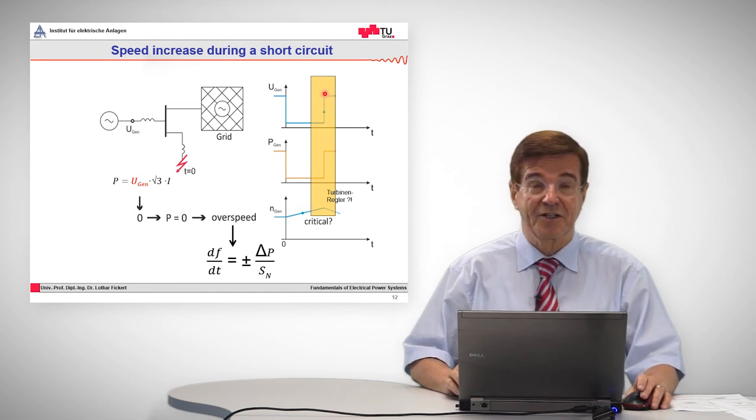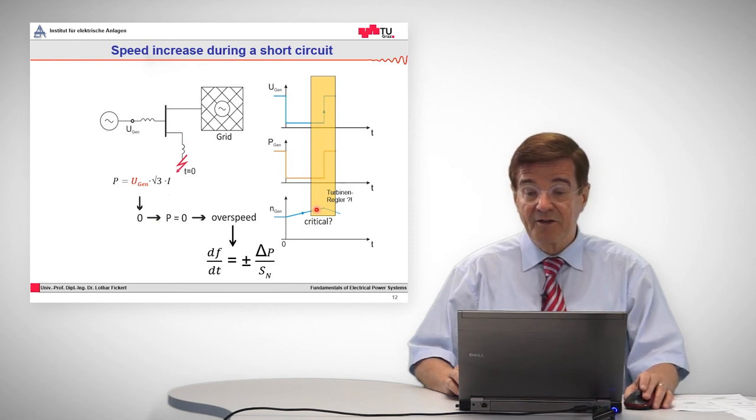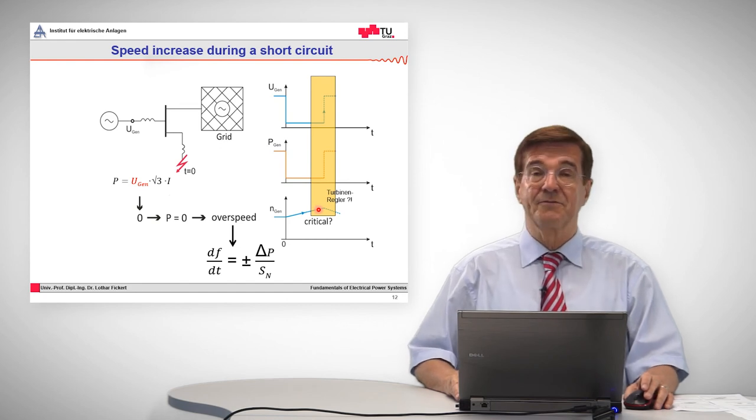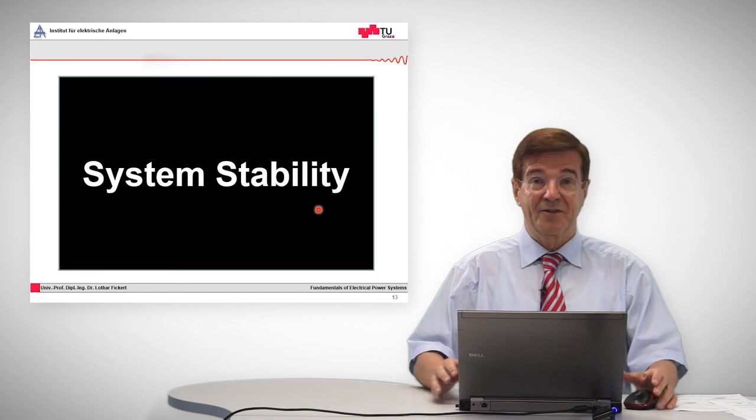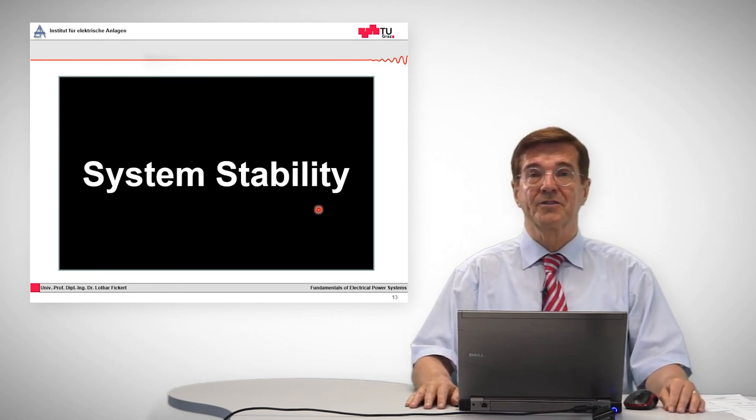And when the voltage comes back after the fault has been tripped here, so it will be tripped there, then the turbine is on a too high speed and it may not be in synchronism with the rest of the system anymore. And that is the blackout. So this was the overview and the short comprehension about system stability.